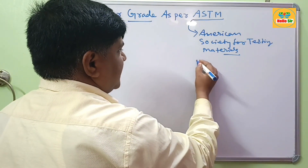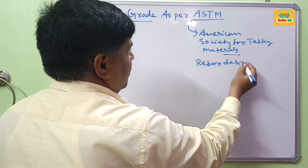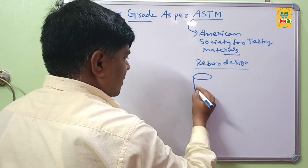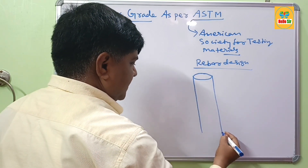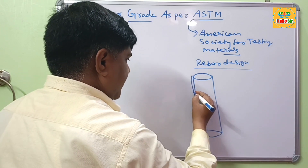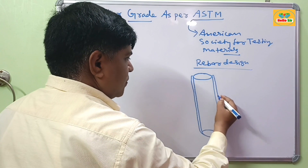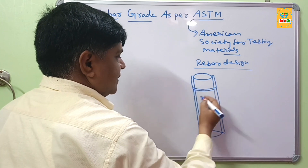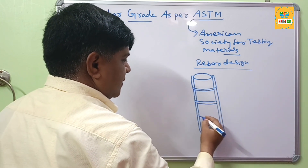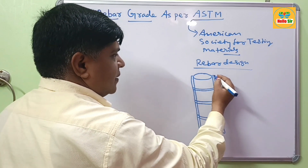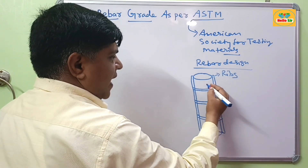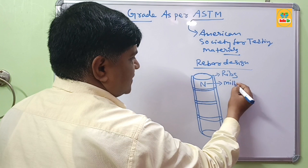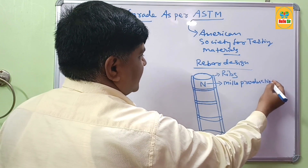First, let's look at the rebar designation — what are the markings on rebar? There are four marks on rebar. Rebar has ribs, like a structured surface with different ribs, which are necessary for the bond strength between the rebar and concrete. The first marking stands for Mills Production.